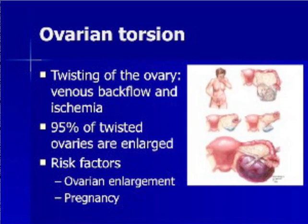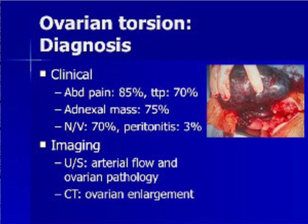Pathophysiology of ovarian torsion involves twisting of the ovary causing venous backflow and ischemia. The vast majority of torsed ovaries are enlarged, but up to 5% of ovarian torsions occur in normal-sized ovaries. The major risk factors are ovarian enlargement and pregnancy. Infertility is the most important sequela, and patients at risk should be immediately evaluated for possible operative repair. The diagnosis is extremely difficult to make on clinical grounds alone. Although most patients exhibit abdominal pain and tenderness, a sizable minority lack these findings. About a quarter of patients will not have a palpable adnexal mass on physical exam. Although ultrasound can demonstrate decreased arterial blood flow and ovarian enlargement, a negative ultrasound in a patient at high risk for torsion cannot rule out the diagnosis.